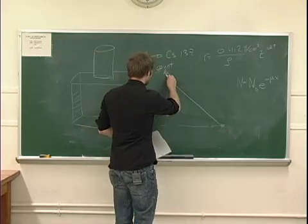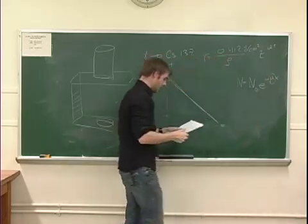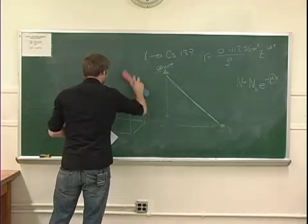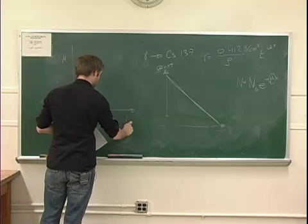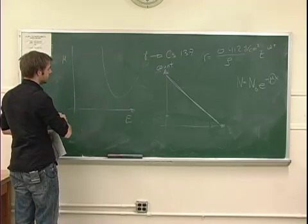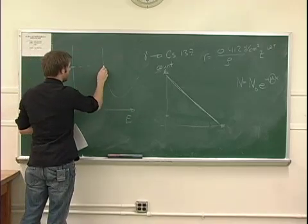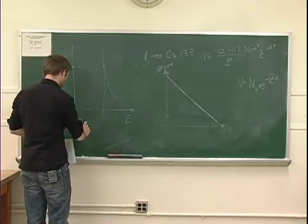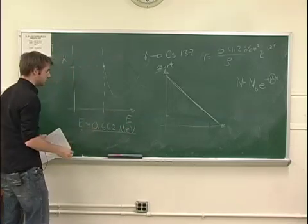Now once you have mu, there's another nice graph on page 5 that graphs mu compared to the energy of the photons. It looks kind of like this. It's actually a semi-log plot on the x-axis. And from here, once you know what your mu is, you can go ahead and determine what the energy of the photons were. And according to the lab notebook, the energy of these photons should be approximately 0.662 MeV. So that's approximately what you should find.